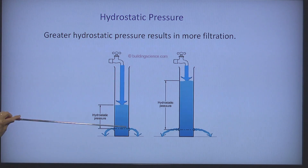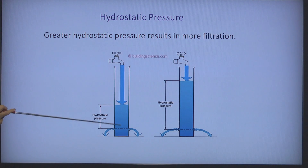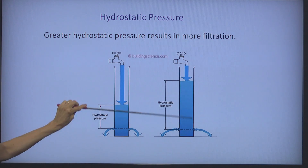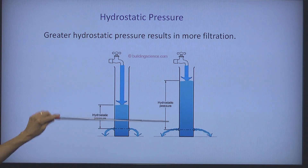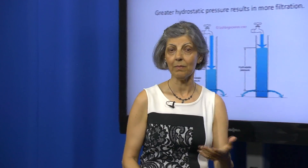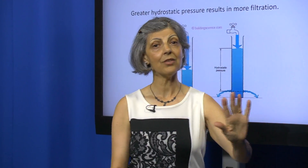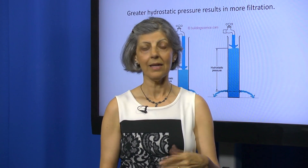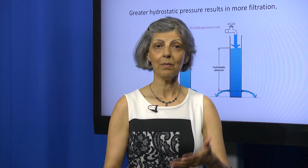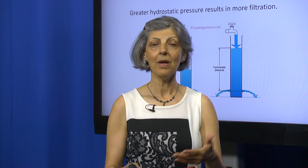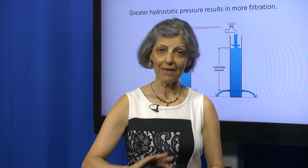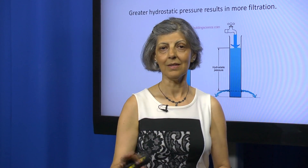The greater the hydrostatic pressure, the greater the filtration. For example, if a person has low blood pressure because they are bleeding and have lost some blood, filtration across the kidney will be far less than normal. The paramedics must administer fluids to increase blood pressure and blood volume, bringing hydrostatic pressure back to normal so the person can filter waste from the blood to the kidneys.